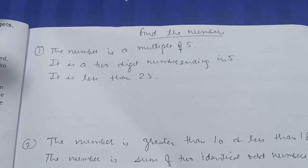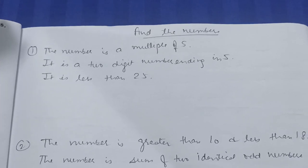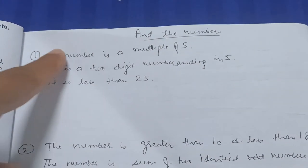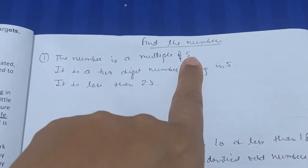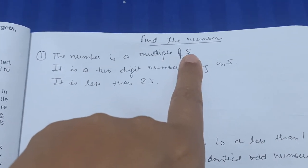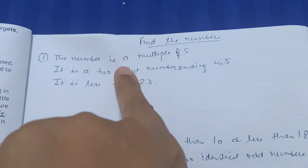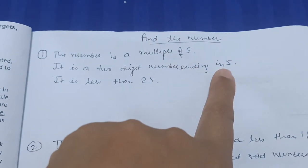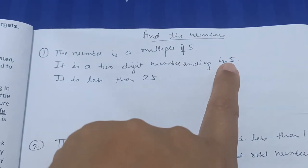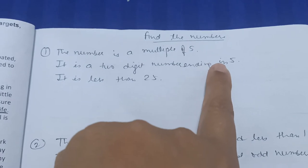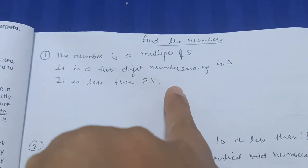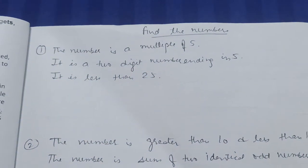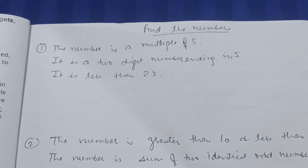This is the last question in which we are using math concepts, but just a little advanced. Find the number. The number is a multiple of five—she knows skip counting by five: five, ten, fifteen, twenty, twenty-five. It is a two-digit number ending in five, so it's not ten or twenty. And then it is less than 25, so obviously it is 15.